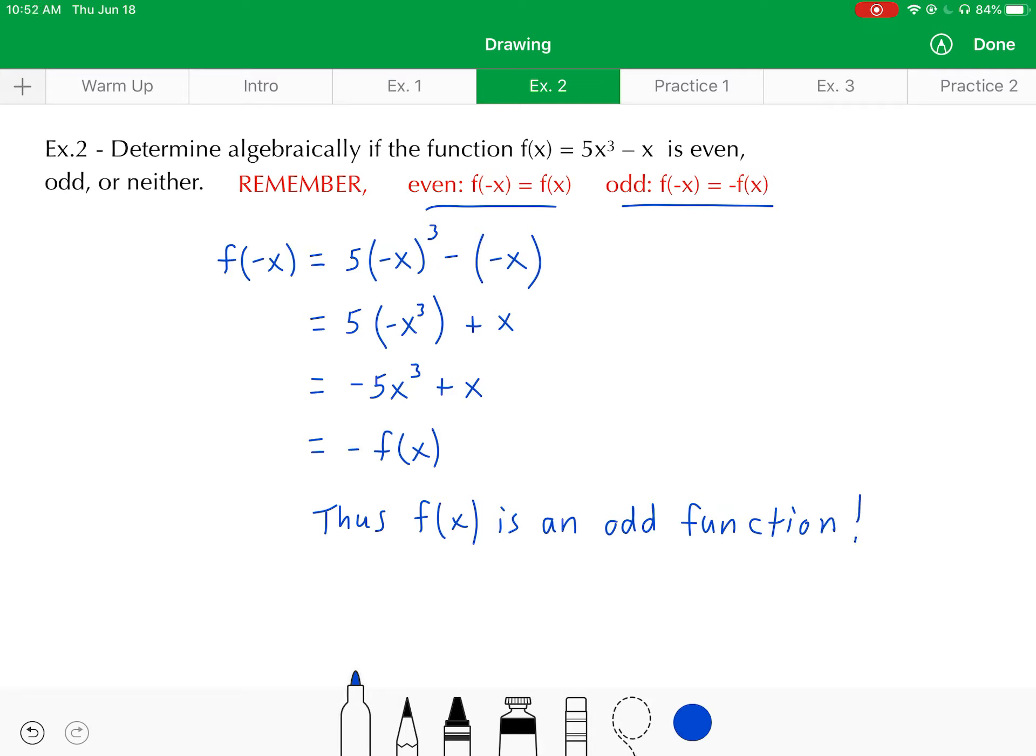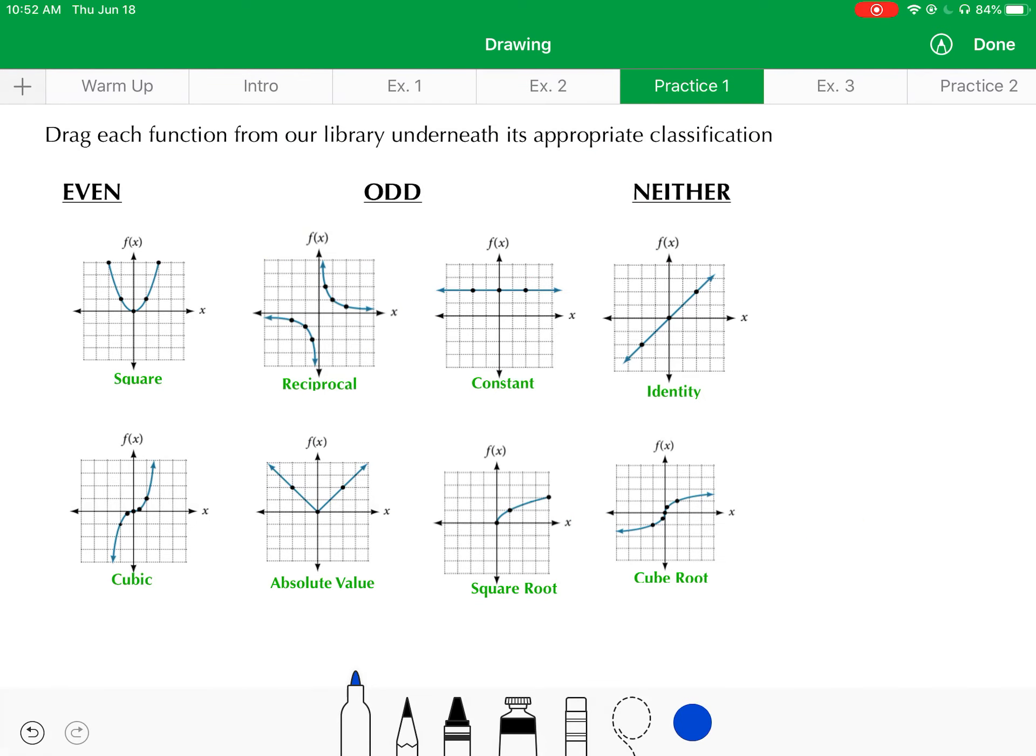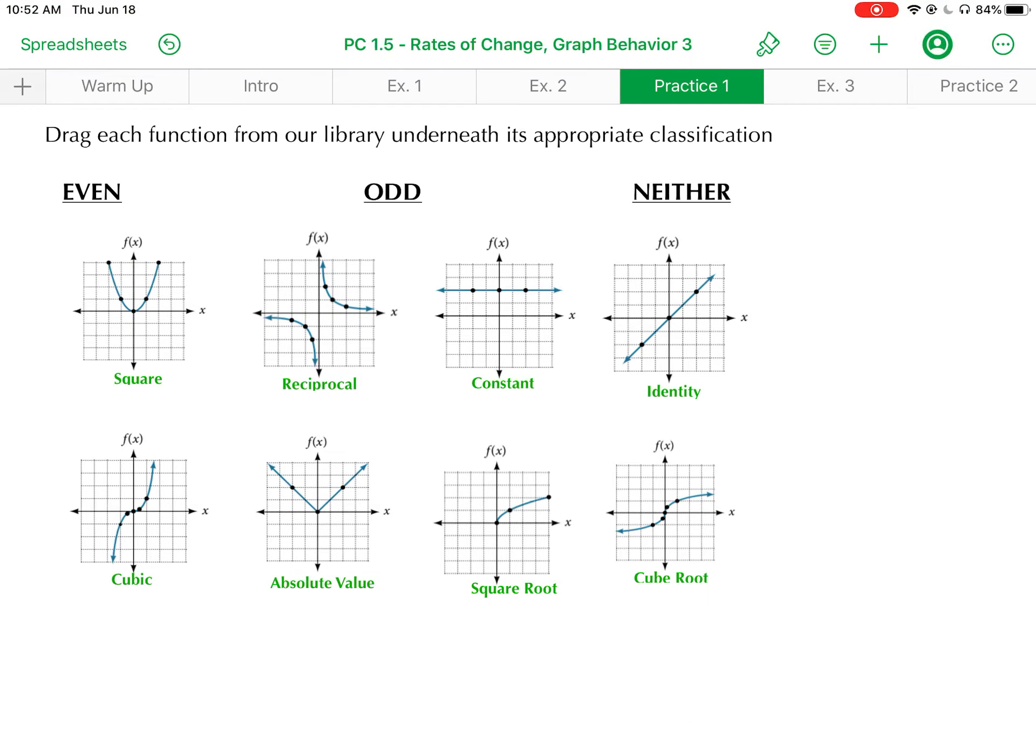All right. At this point, you have your first opportunity to practice here. In this particular practice problem, you are given several graphs. And you are able to make sure you're out of your writing tool. So, hit done. And you can drag each one of these graphs under the proper label. Whether it's an even function, an odd function, or neither. So, I want you to pause the video and do that yourself. And then start the video back up. And you can check your work with mine.